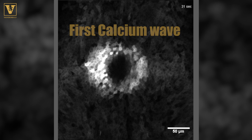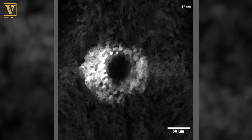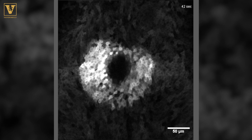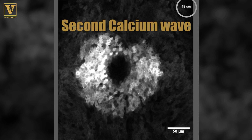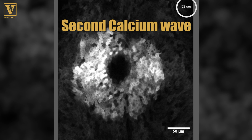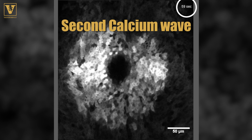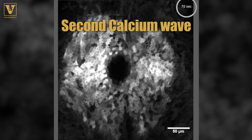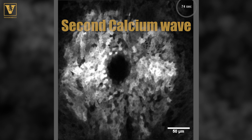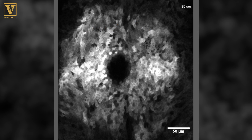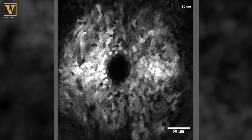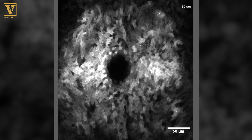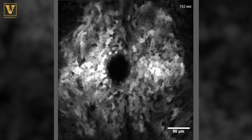The next thing we saw was multiple stages of calcium dynamics in cells around the wound. First you have a wound and calcium appears. About 45 seconds after wounding, we see a second calcium wave spread away from the wound. So here we have two waves spreading around one wound site.